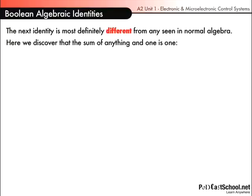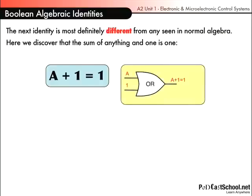The next identity is most definitely different from normal algebra. Here we discover that the sum of anything and one is one: A plus 1 equals 1. Now that won't make sense in the real numbers world, will it? But if we have a look at our OR gate here, and remember ORs map with addition.